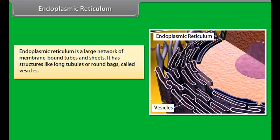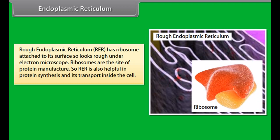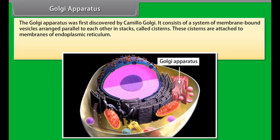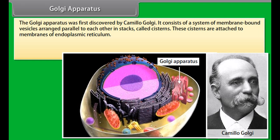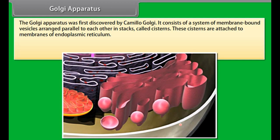Endoplasmic reticulum is a large network of membrane bound tubes and sheets. It has structures like long tubules or round sacs called vesicles. On the basis of presence of ribosome, they are of two types: rough endoplasmic reticulum (RER) and smooth endoplasmic reticulum (SER). RER has ribosomes attached to its surface, so it looks rough under the electron microscope. Ribosomes are the site of protein manufacture, so RER is also helpful in protein synthesis and its transport inside the cell.